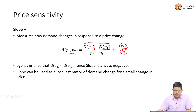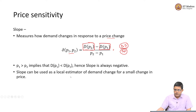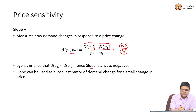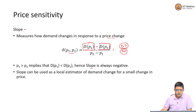We can look at slope as a local estimator of change in demand for a very small change in price. Simply calculate the slope of the tangent at that particular point and we will get the sensitivity for that particular price.